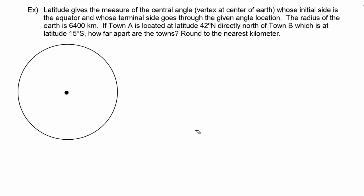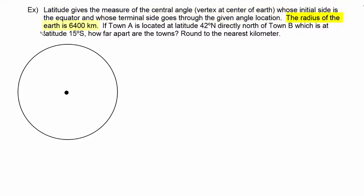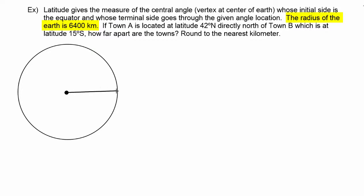In this next example, we're told that latitude gives the measure of the central angle, meaning the vertex of the angle is at the center of the circle — in this case, the Earth — whose initial side is the equator and whose terminal side goes through the given angle location. The radius of the Earth is 6400 kilometers, which we mark at the equator in our diagram.